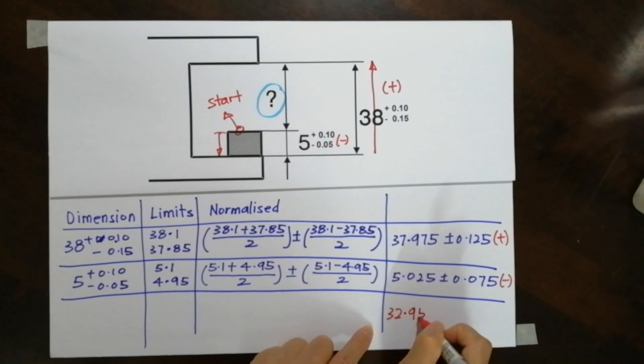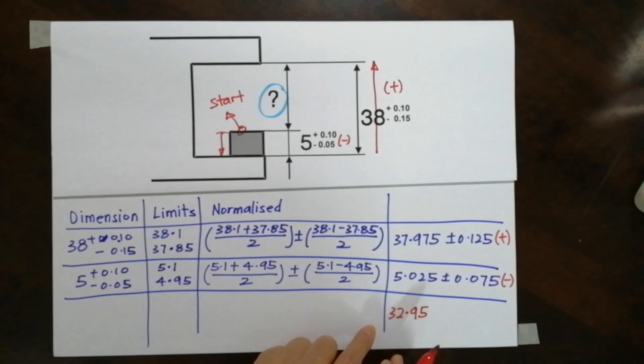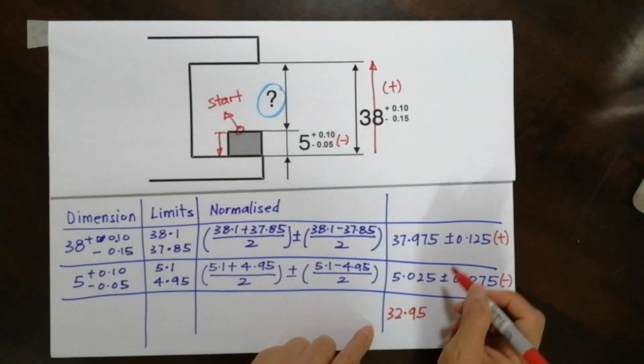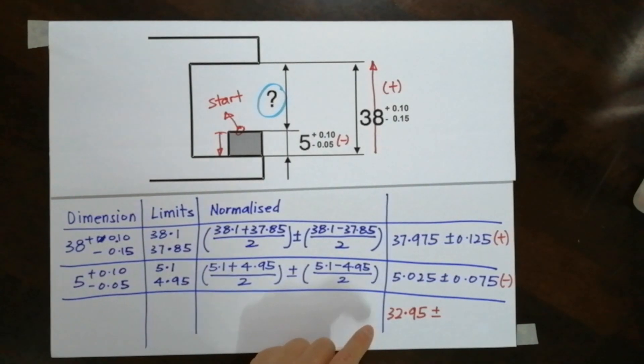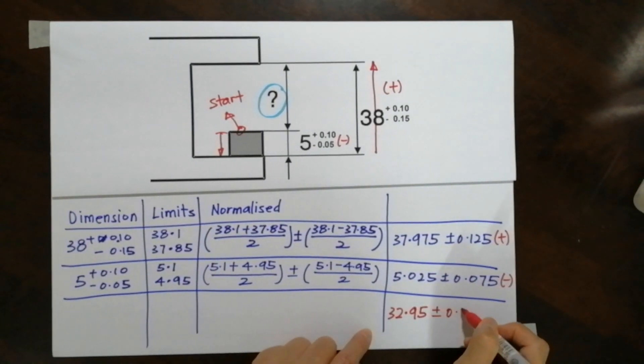So when I combine them, I will have 32.975. This is only valid for the nominal dimension. For the tolerance plus and minus, there's no direction, so we just add them up: 0.2.